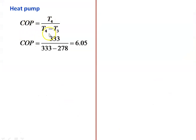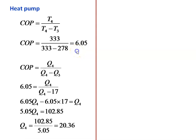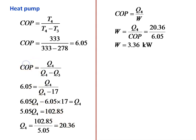For the heat pump: COP equals T4 by (T4 minus T3) equals 333 divided by (333 minus 278) equals 6.05. COP equals Q4 by (Q4 minus Q3), so 6.05 equals Q4 by (Q4 minus 17). Rearranging: 6.05 into Q4 minus 6.05 into 17 equals Q4, giving Q4 equals 20.36 kilojoules. The heat rejected by the heat pump equals 20.36 kilowatts. COP equals Q4 by W, so W equals Q4 by COP equals 20.36 divided by 6.05 equals 3.36 kilowatts — this is the work given to the heat pump.